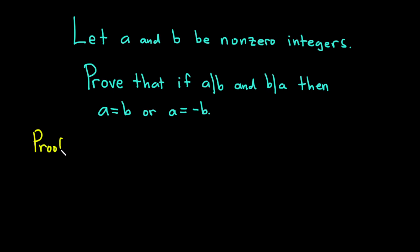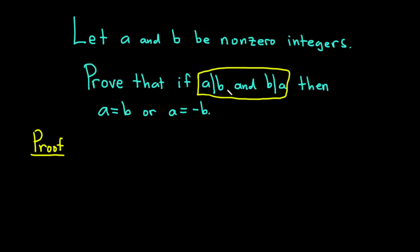Proof. To prove something in mathematics of this form, we start by assuming everything after the word 'if'. This is an if-then type statement. So if this is true, then we have to show that this is true. We'll start by writing down our hypothesis that a divides b and b divides a.